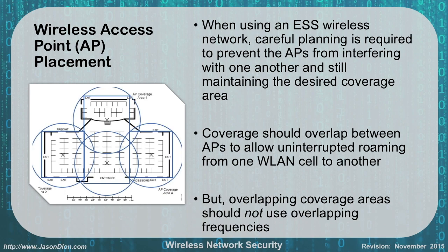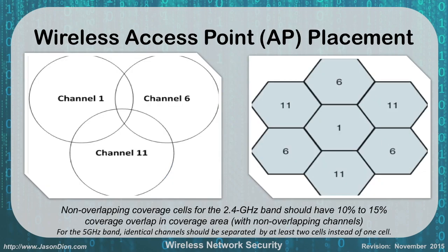Coverage needs to overlap between access points to give you uninterrupted roaming from one cell to the other — about a 10 to 15 percent overlap in each of these cells. Overlapping coverage areas should not use overlapping frequencies. Remember channels 1, 6, and 11? You don't want two access points with the same channel touching each other or you'll have interference. So channels 1, 6, and 11 always have to be arranged accordingly, and the way we do that is with a honeycomb pattern.